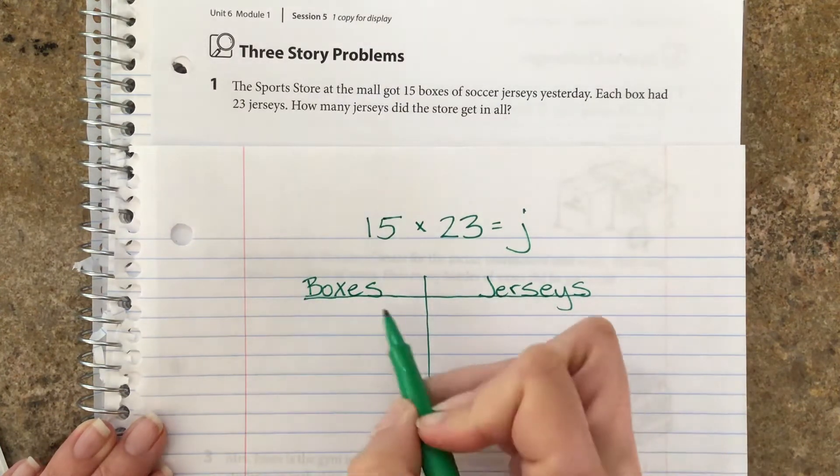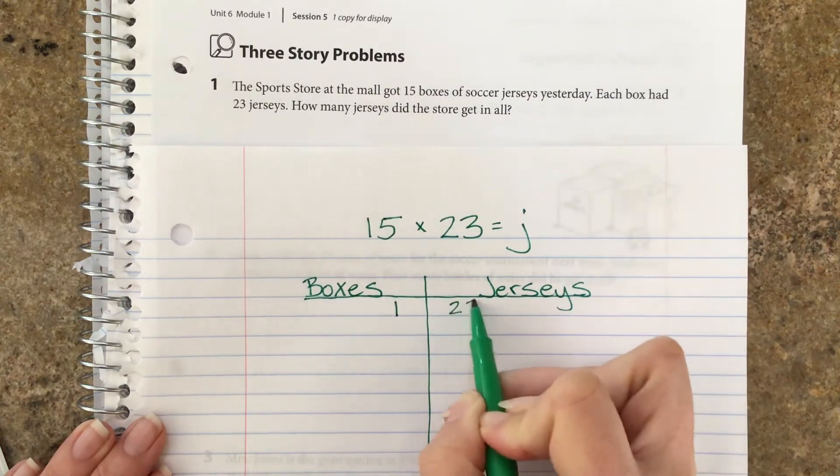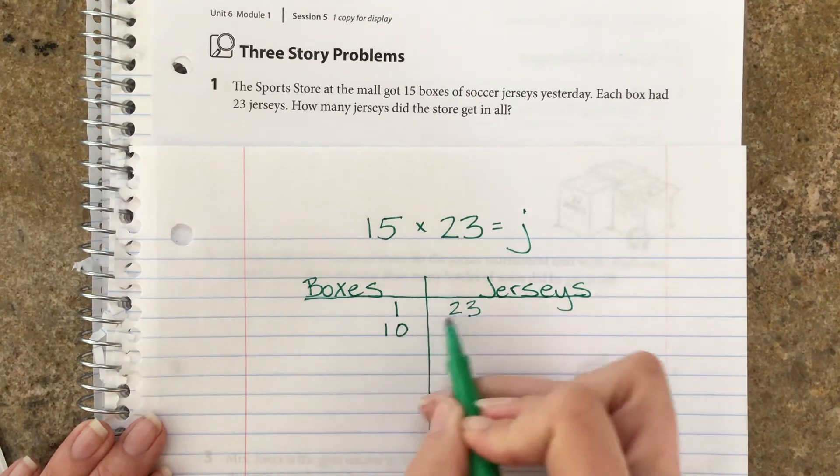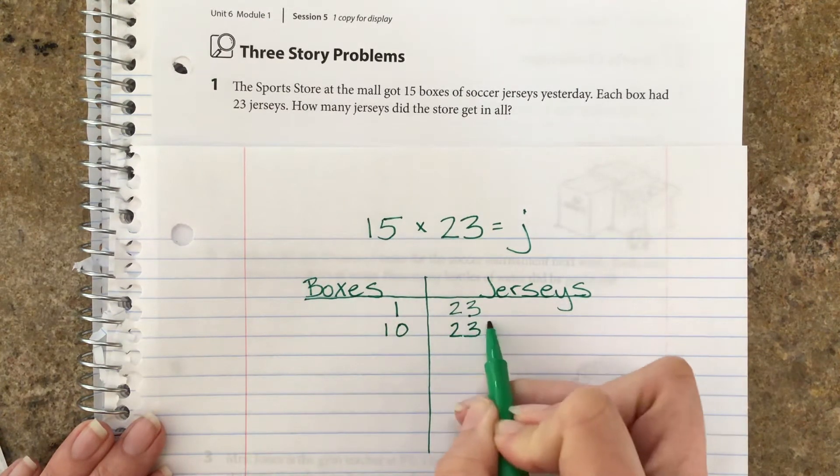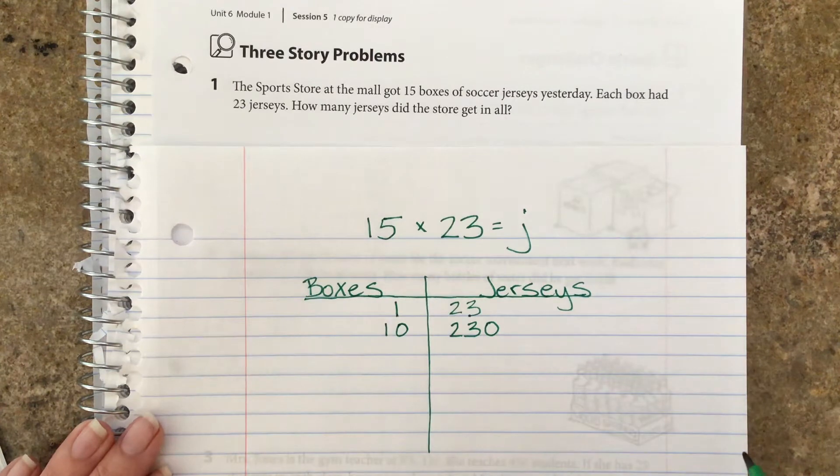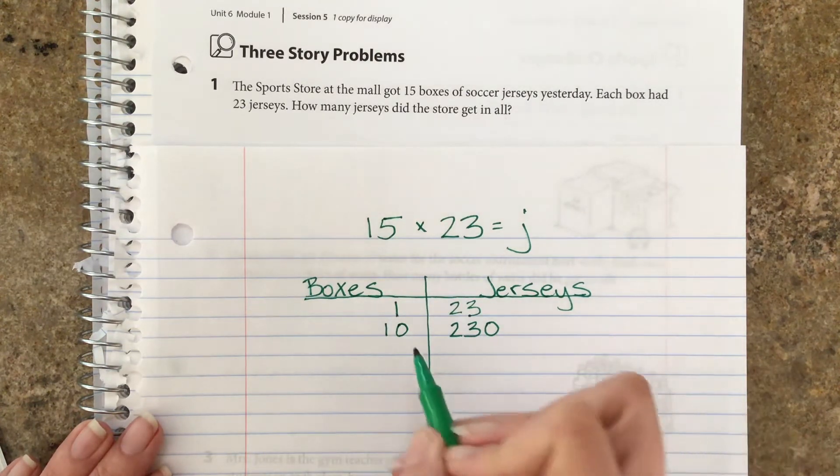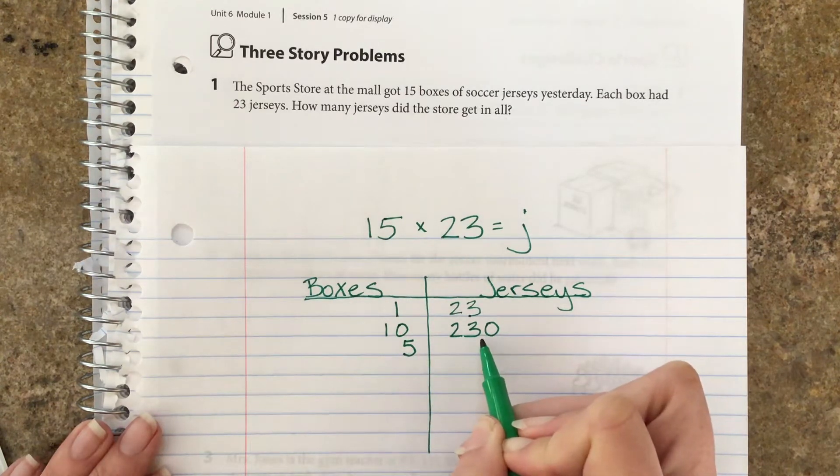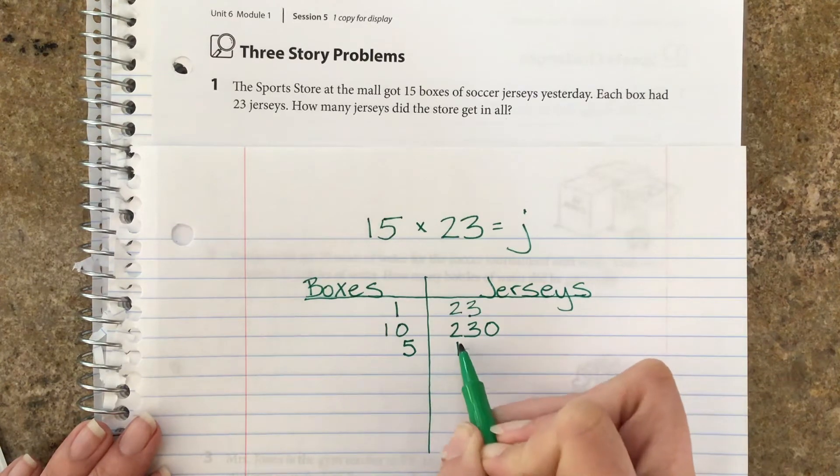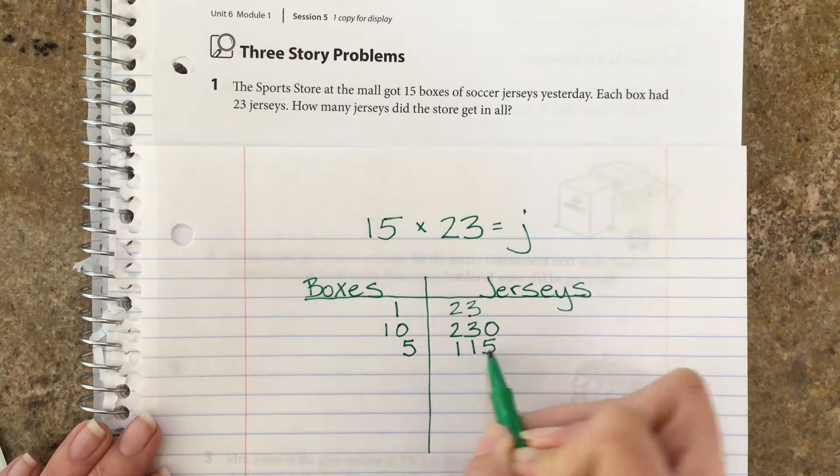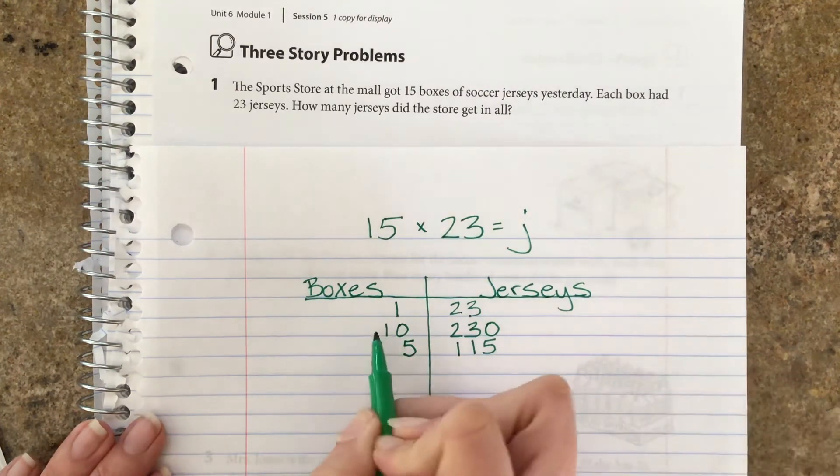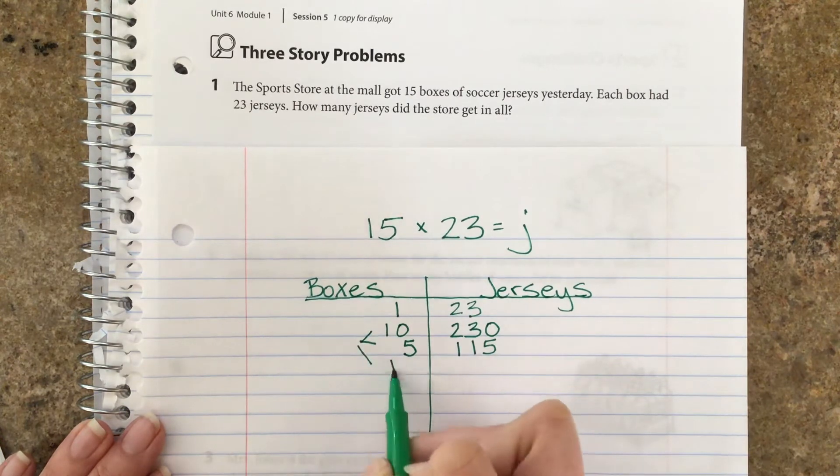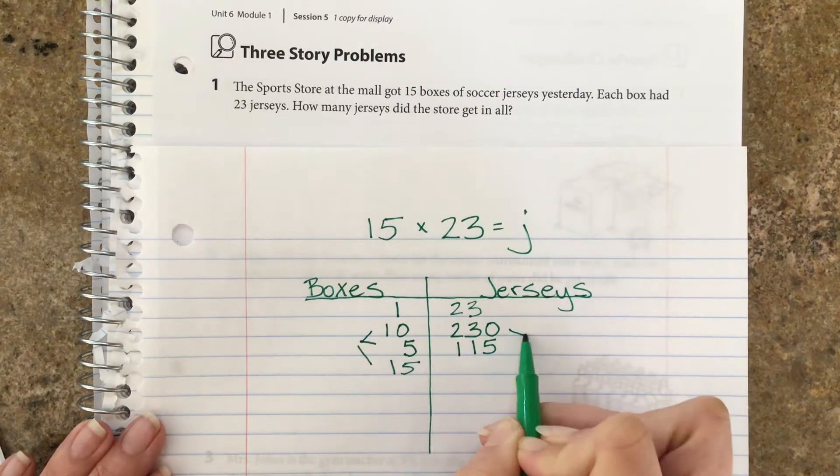In the past we went side to side. This time I'm going to do it this way just to show. One box had 23 jerseys, correct. 10 boxes: 10 times 23, you're going to use the 23 and attach a zero, so 230. I know that half of 10 is 5, half of 230 would be 115. 100 is half of 200 and 15 is half of 30.